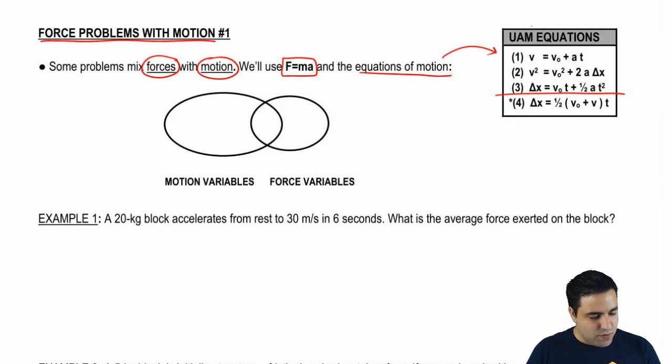So remember UAM equations, that's what I call them. They have five variables: v initial, v final, delta x, delta t, and a. These are the motion variables. If you look at F equals ma, well it has F, m, and a. And the reason why I drew it like this is so you see that a exists in all of these equations, not only in motion equations and variables, but also in the force equation F equals ma. So you can already imagine what's going to happen.